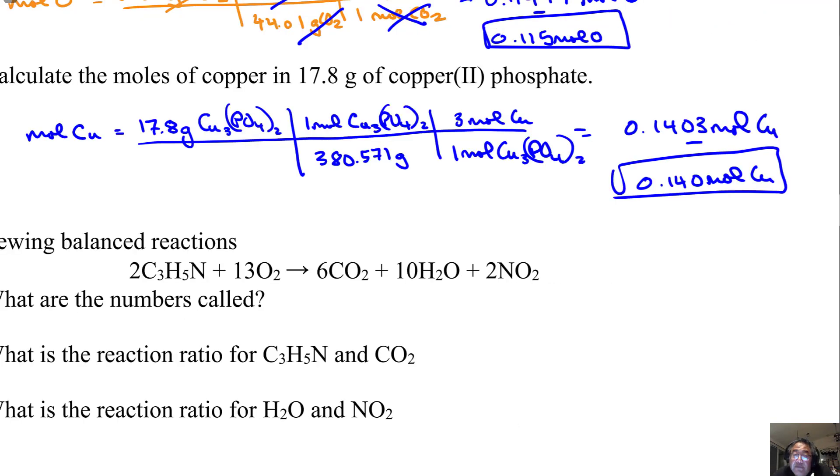Here's that solution worked out for you. Going from 17.8 grams to moles of something in the formula, it's a two-step process. 17.8 grams divided by 380.571 to get to moles of copper(II) phosphate, then the moles cancel, leaving me with 3 moles of copper at the top. I run the calculation: 17.81 divided by 380.571 times 3 moles of copper, which leaves me with 0.1403 moles of copper, rounded to 0.140 moles.